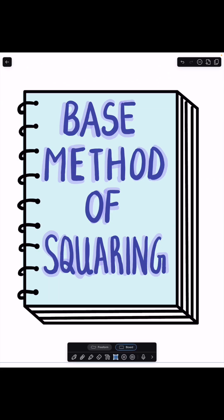If I tell you that I solved it in under 3 seconds, you'll call it impossible. But ancient mathematicians knew a 5000 years old secret that makes this a child's play. It is called base method of squaring.